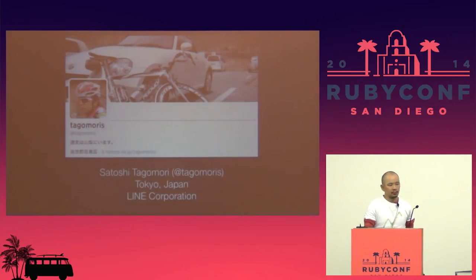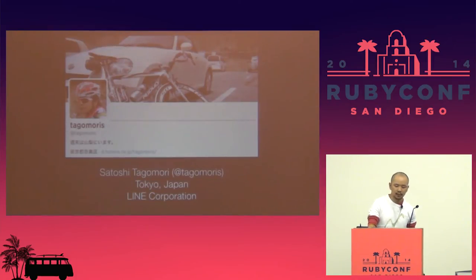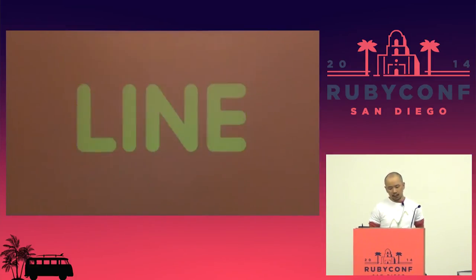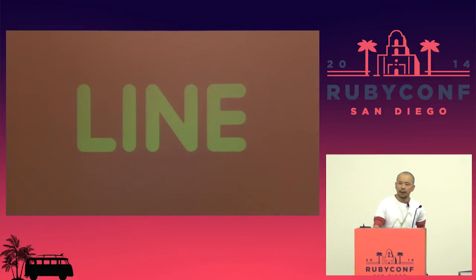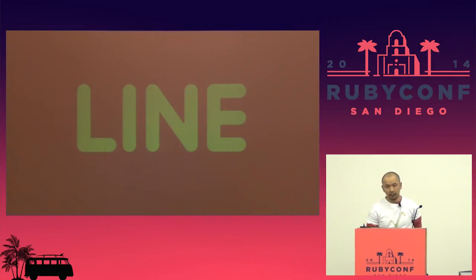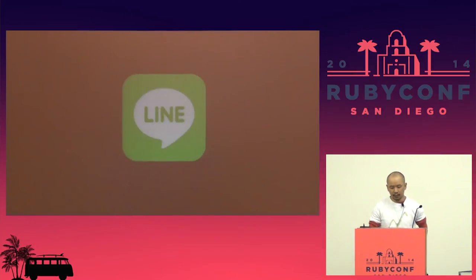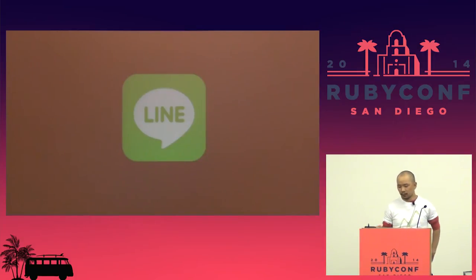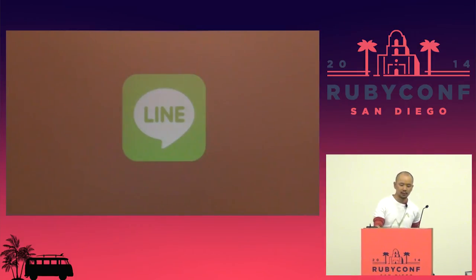My name is Satoshi Tagomori, also known as Tagomori — that is my account name on Twitter, GitHub, and many others. I'm from Tokyo, Japan, and I'm working at LINE Corporation. LINE Corporation is an internet service company serving a messaging application called LINE, just like WhatsApp or Facebook Messenger.